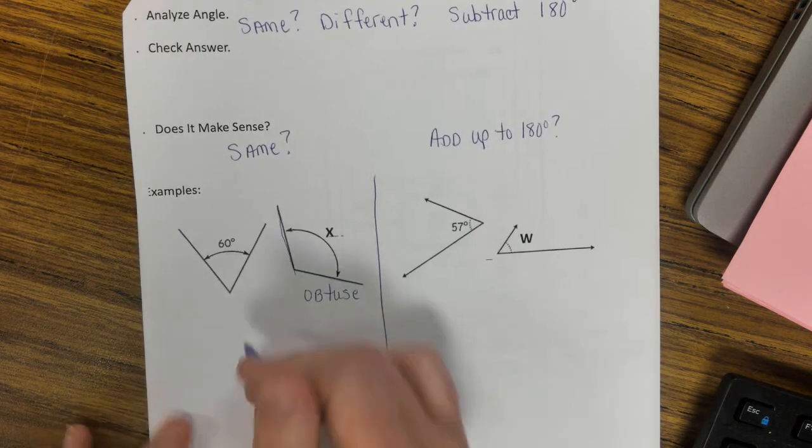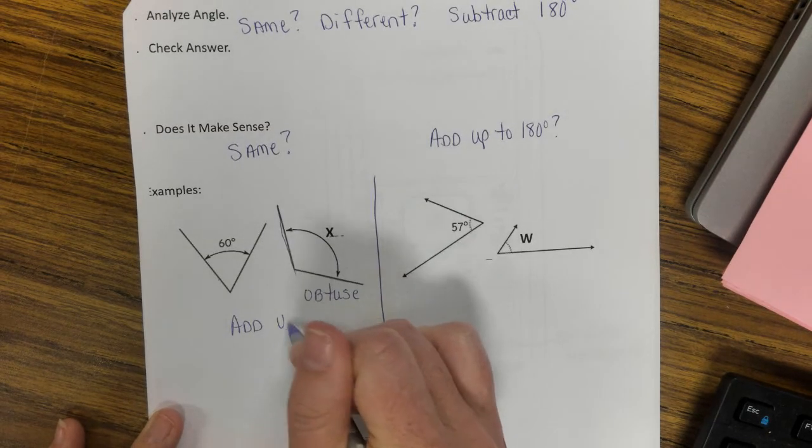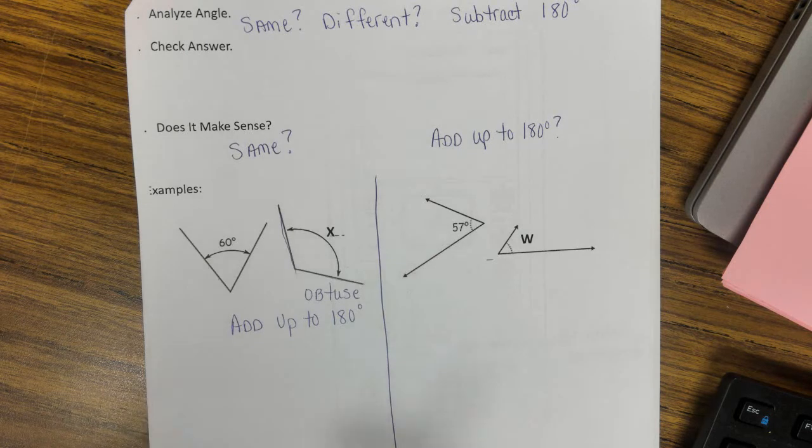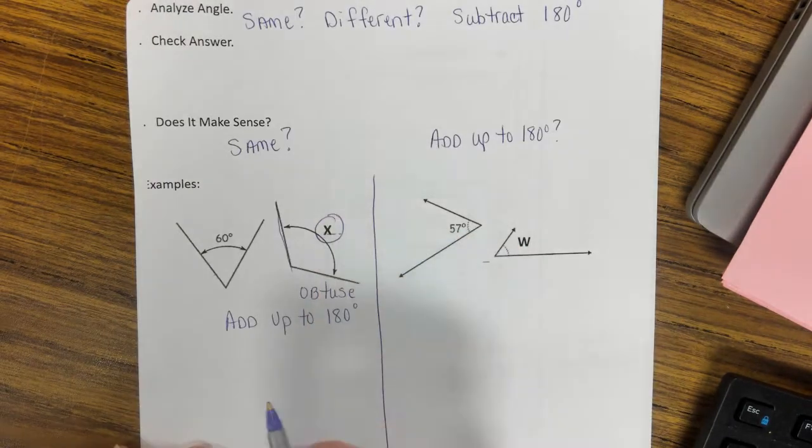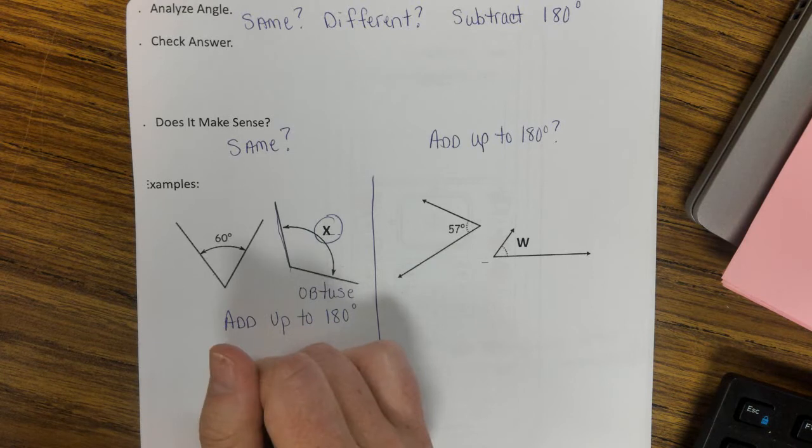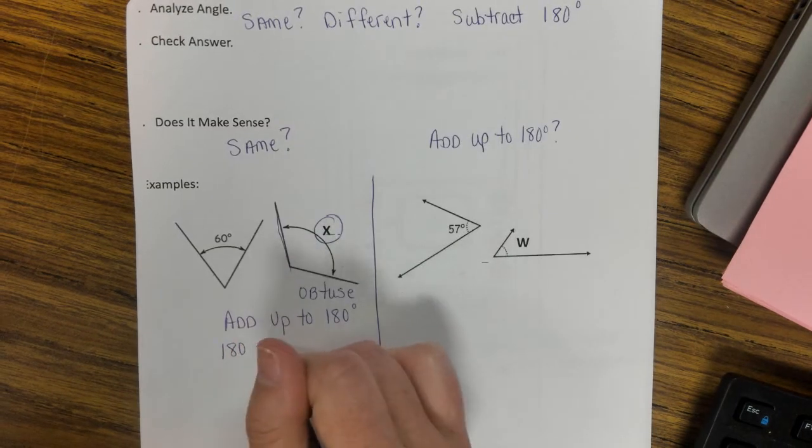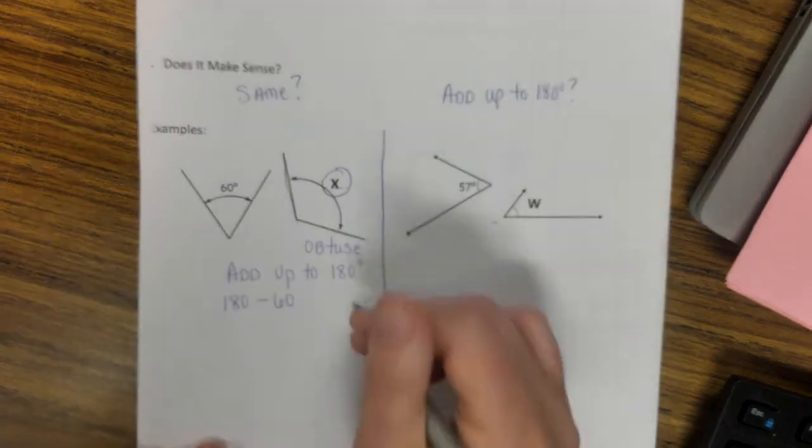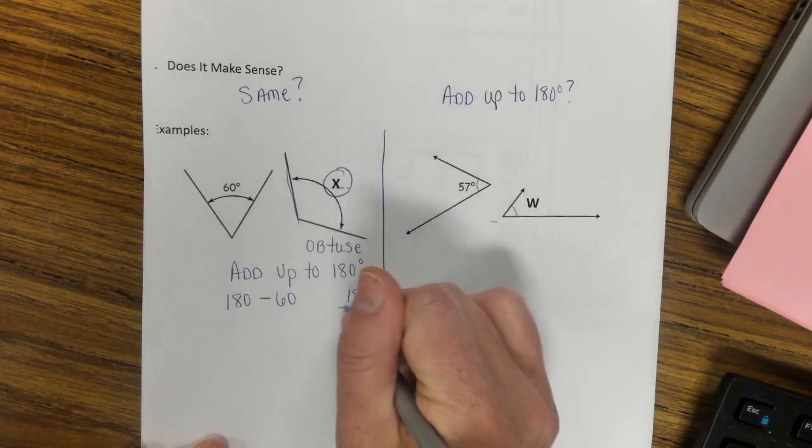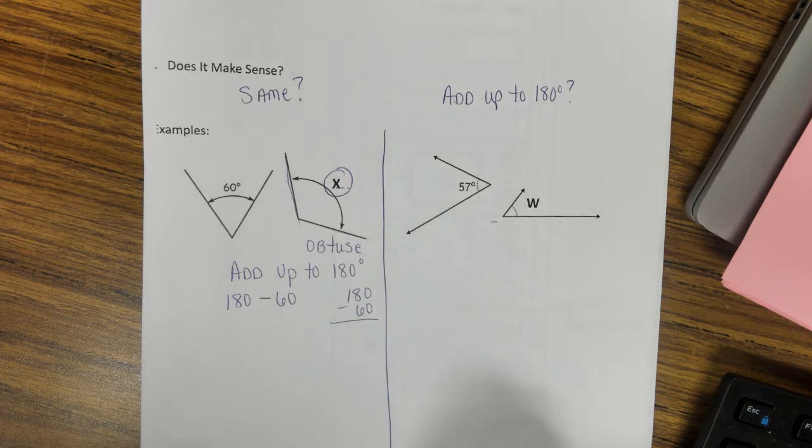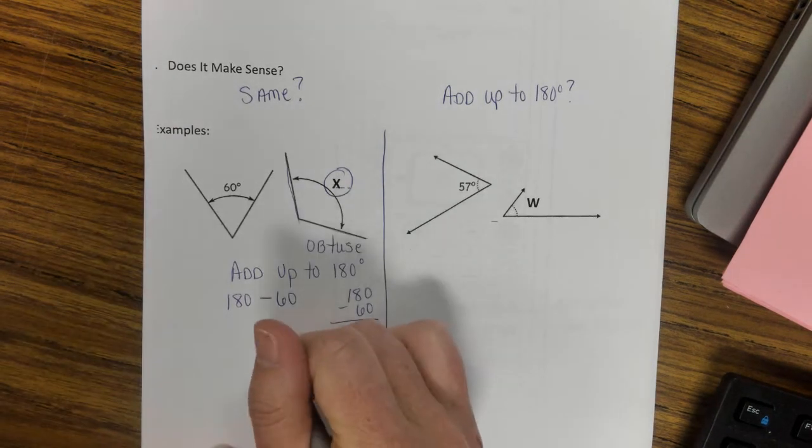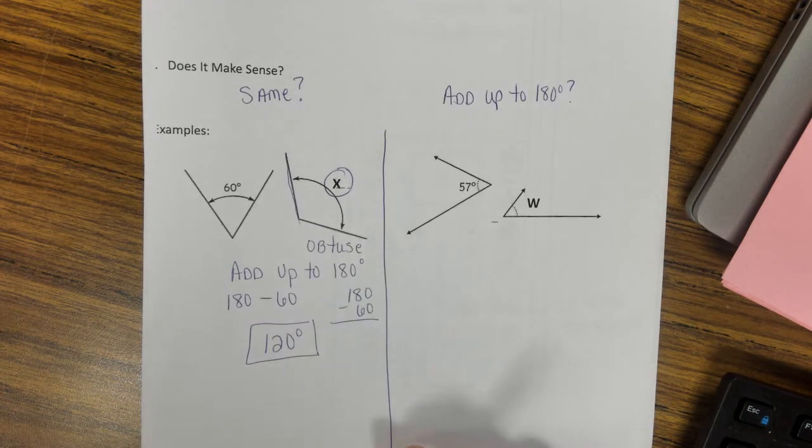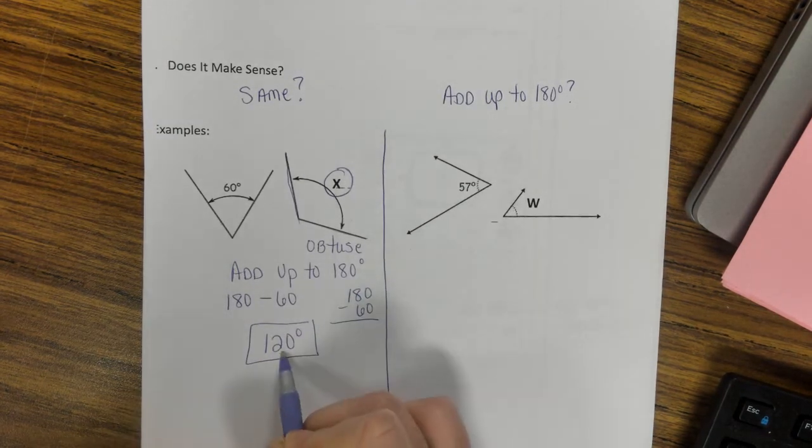To find this missing angle x, all we have to do is say 180 minus 60. You can absolutely use your calculator to get that. Hopefully that's pretty easy for you if you do it by hand. You can also set it up like this. So 180 minus 60 is 120 degrees.